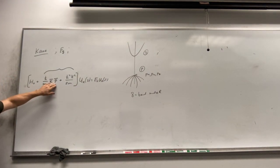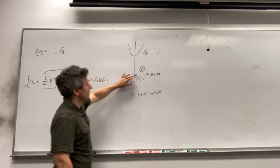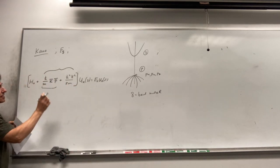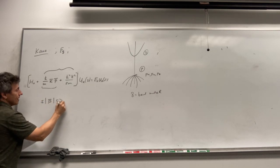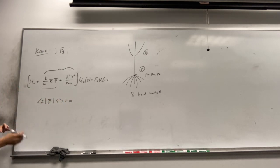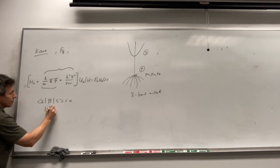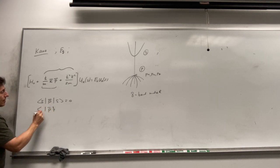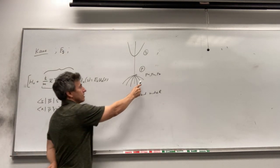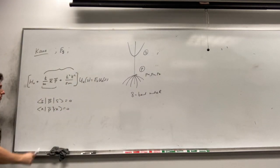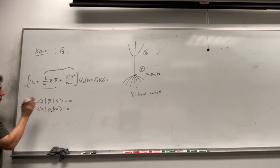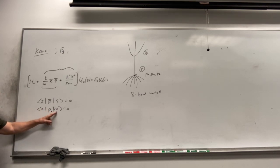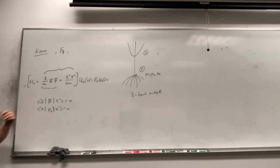In the Kane model expression we have the matrix element of the momentum operator between states. This will be only the matrix element between S and P orbital states. The matrix element between two S states is zero because they have the same symmetry. Similarly, the momentum operator Px has the same symmetry as X, so the matrix element between two P states such as Px and Px, or Px and Py, gives an odd function and the integral is zero.